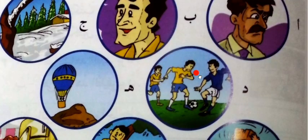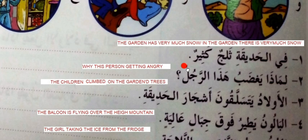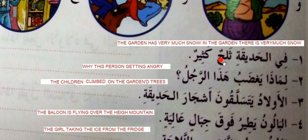The images have letters assigned to each one, and the sentences are listed separately — you see the image and write by yourself. Fi al-hadiqa — in the garden — salaj means ice or snow, so we say thalajun. The sin here comes from the tip of the tongue. Thalajun kathirun — in the garden there is very much snow.